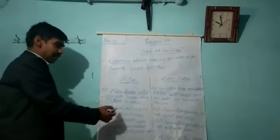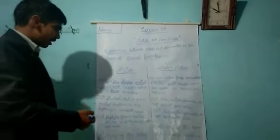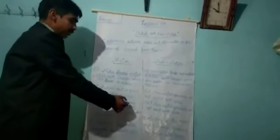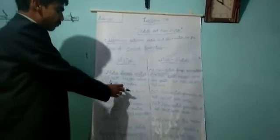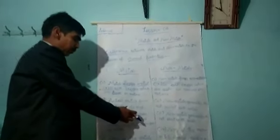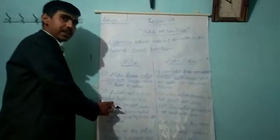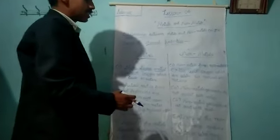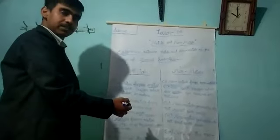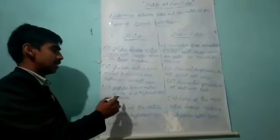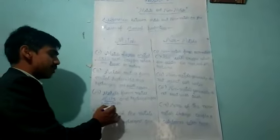Active metals form metal hydroxide and hydrogen gas with water. That means metals react with water to form hydroxide and release hydrogen gas. But nonmetals generally do not react with water.